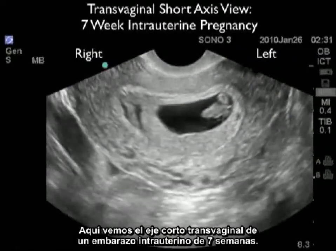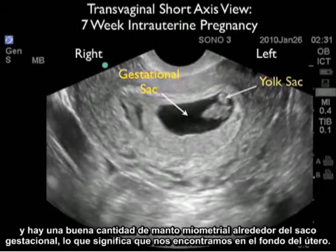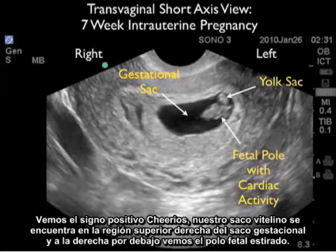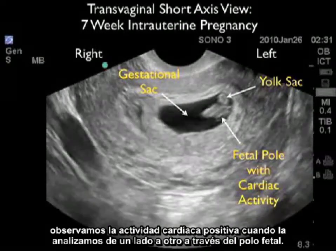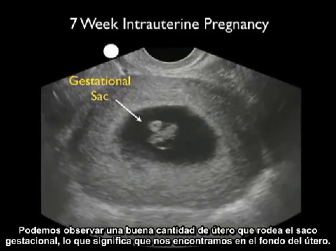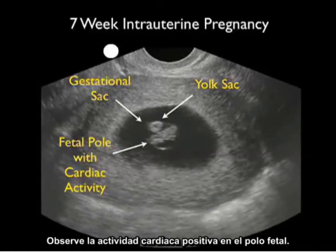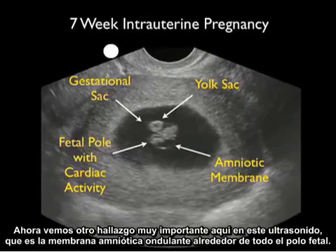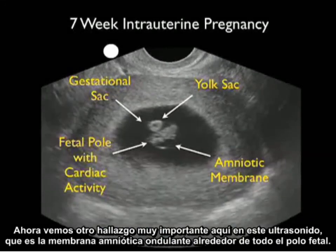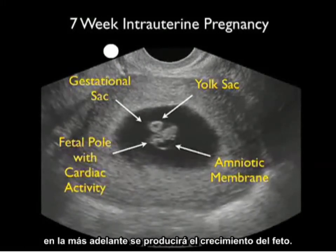Here's a transvaginal short axis view of a 7-week intrauterine pregnancy. The gestational sac is located in the center of the uterus, with a good amount of myometrial mantle surrounding it, signifying a fundal location. We see the positive cheerio sign or yolk sac to the upper right aspect of the gestational sac, and right below, the fetal pole stretched out with positive cardiac activity. In another 7-week example, the amniotic membrane is visible billowing out from around the fetal pole — it will eventually plaster down on the margins of the gestational sac to form the amniotic cavity for further fetal growth.